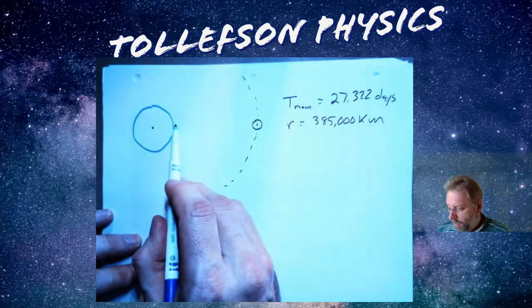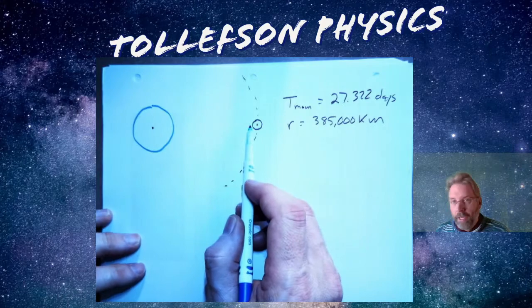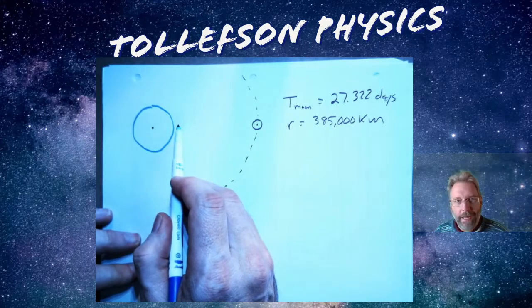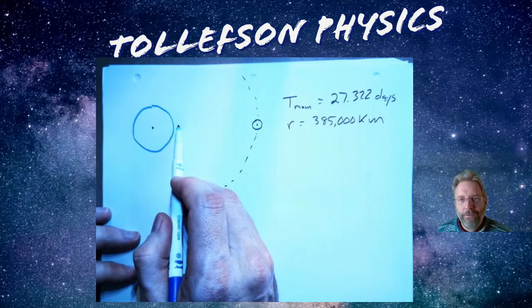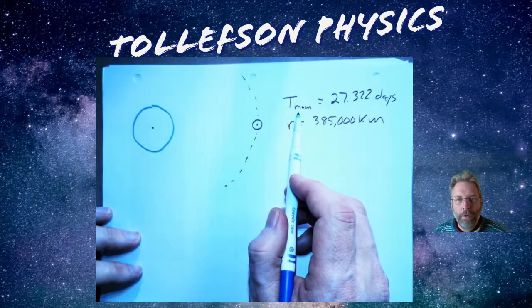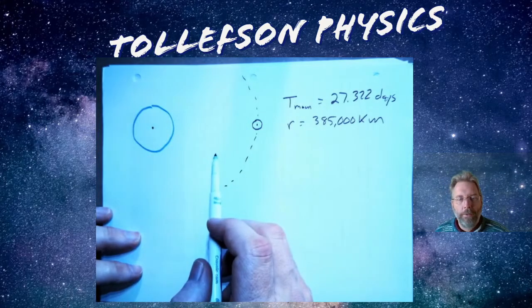One experiment that's been done is you can shine a beam of light, hit a mirror that an astronaut left on the moon and have it come back and time it. And so you can figure out that from there. And then this is the average time that it takes the moon to go around and that's just based upon observation.